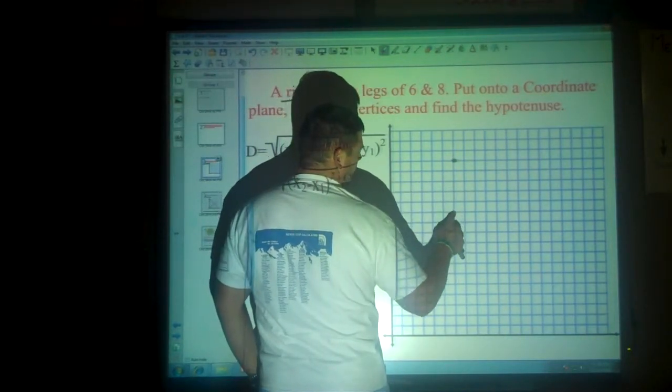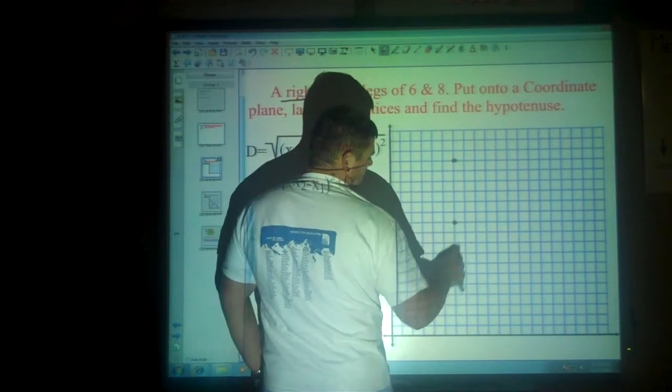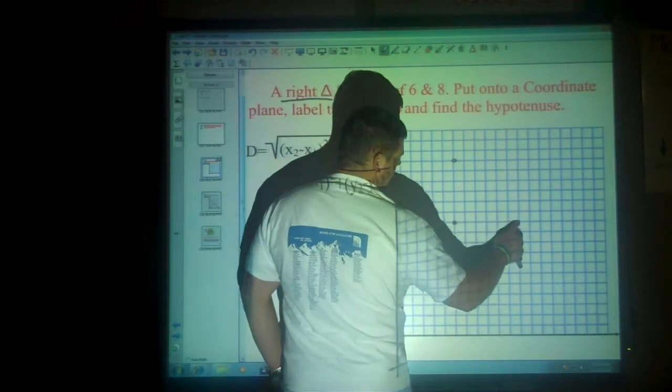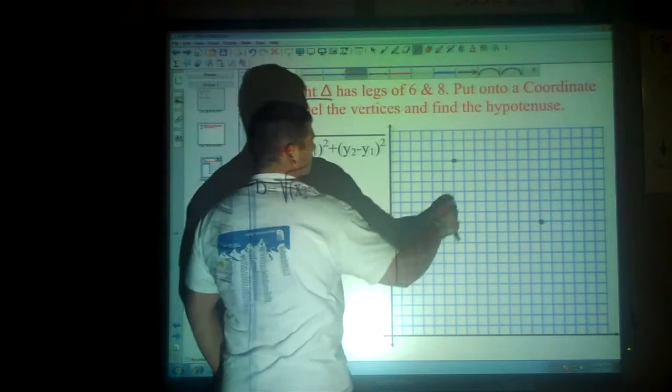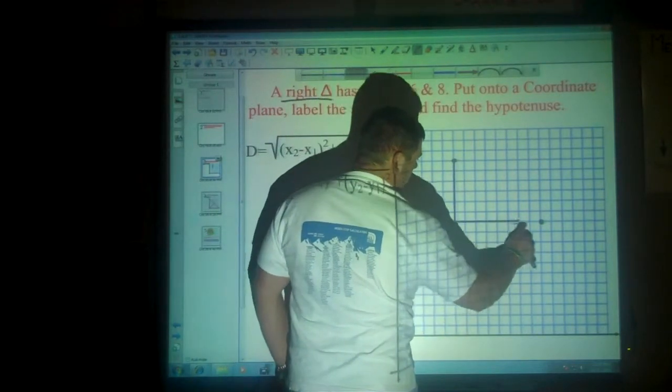We could be dealing with this triangle here. [Counting grid squares to draw a triangle with legs of 6 and 8 units]